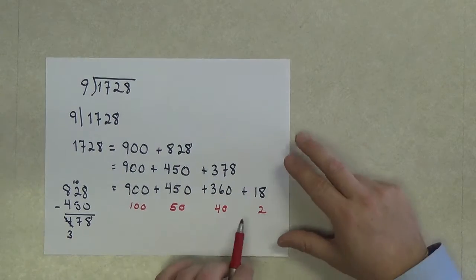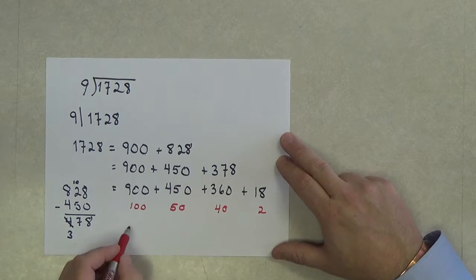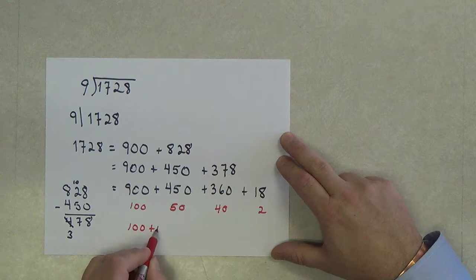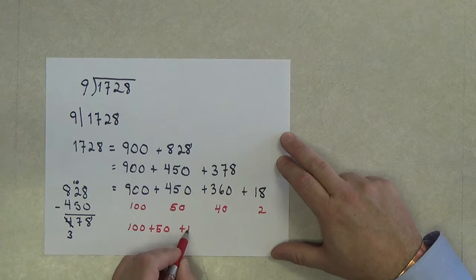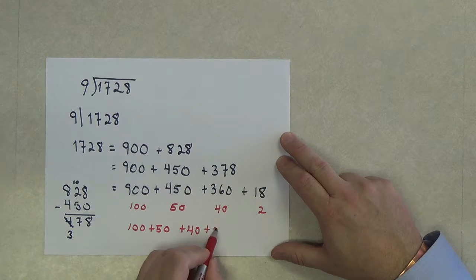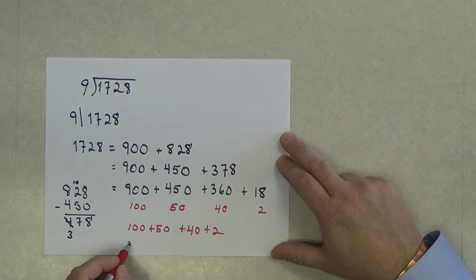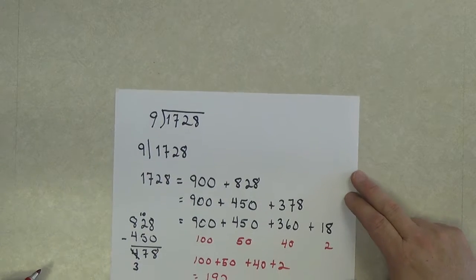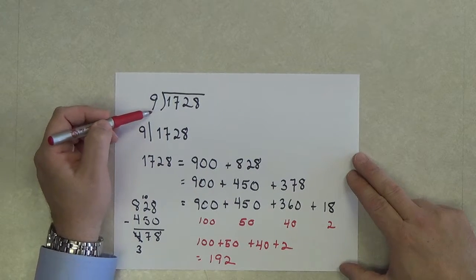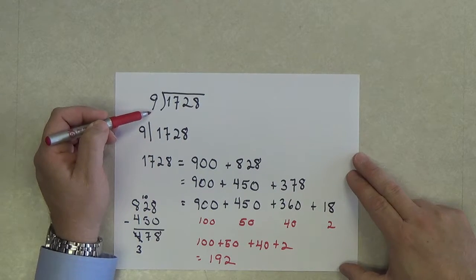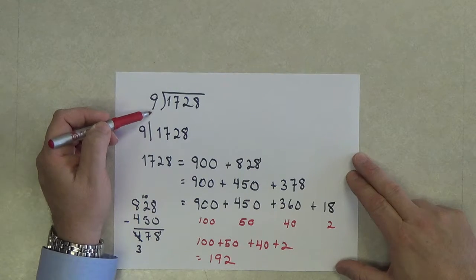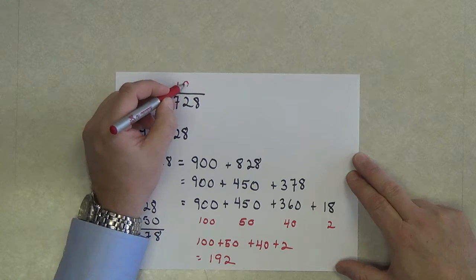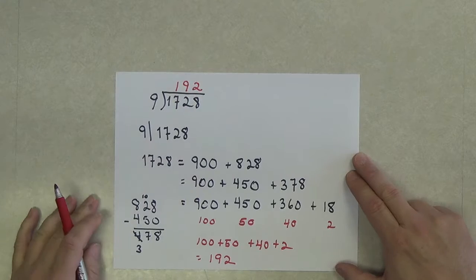So, in other words, let's add these red numbers together: 100 plus 50 plus 40 plus 2. Well, that would be 192. Want to take a bet on what is the answer to 1728 divided by 9? You've guessed it, 192.